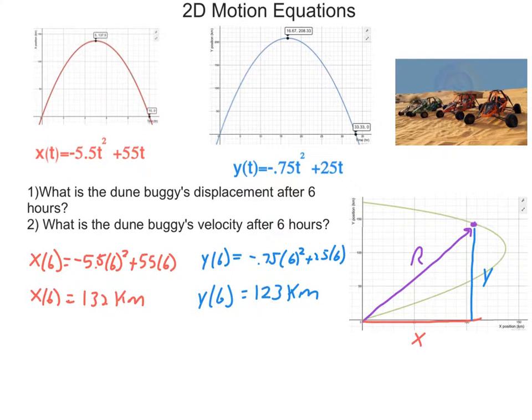Alright, now I've actually come out with my x and y components by substituting that in for the displacement. It was 123 kilometers, and then for the y axis, excuse me, x axis was 132 kilometers, and the y axis was 123 kilometers there.